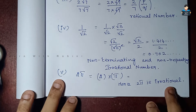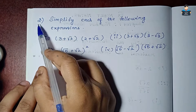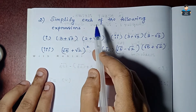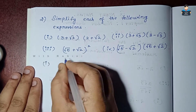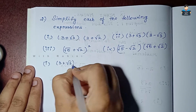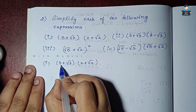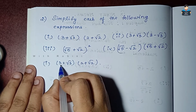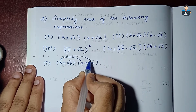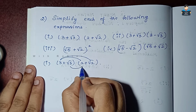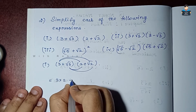First sum complete. Second sum: simplify each of the following expressions. First subdivision: (3 + √3)(2 + √2). We expand by multiplying: 3 × 2, then 3 × √2, then √3 × 2.